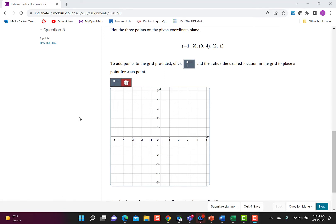Hi everyone. So I wanted to show you a little bit about graphing in Mobius. This question says plot the three points on the given coordinate plane. We have the points negative 1, 2, 0, 4, and 2, 1.